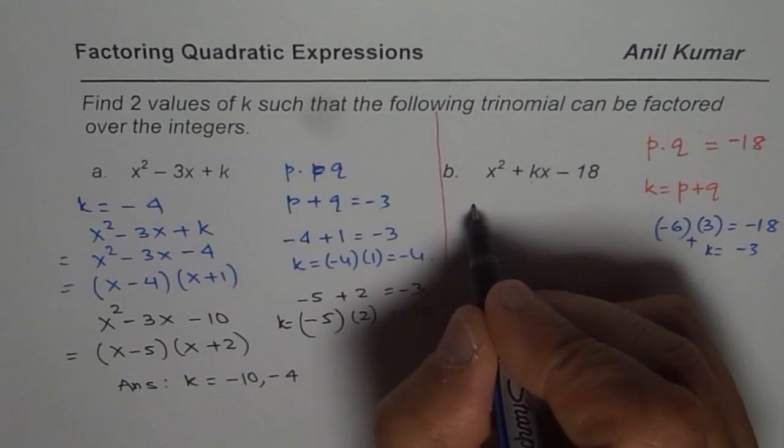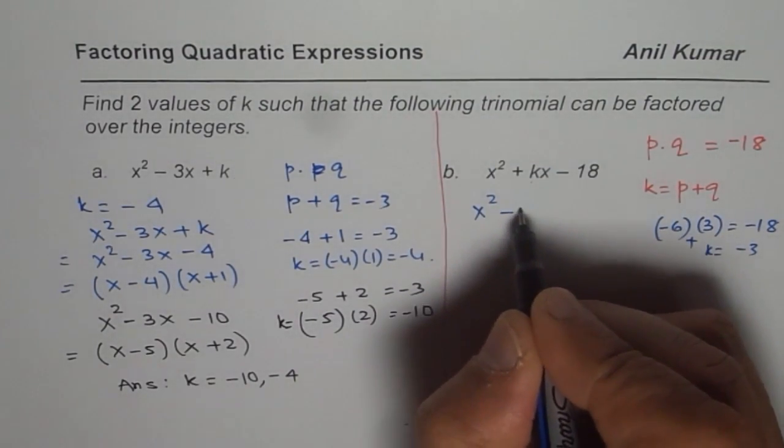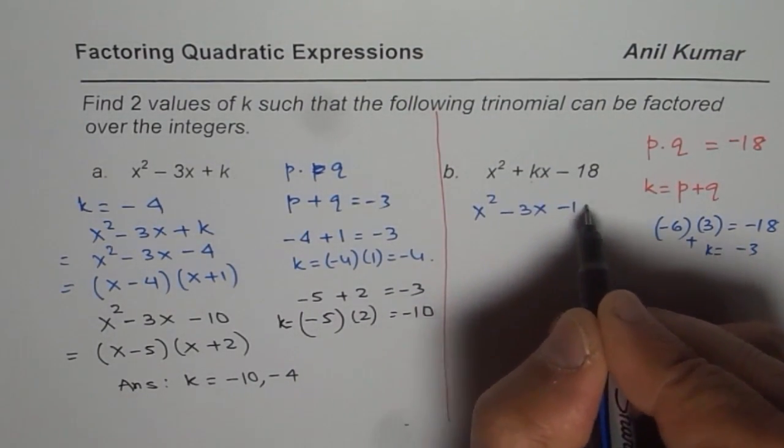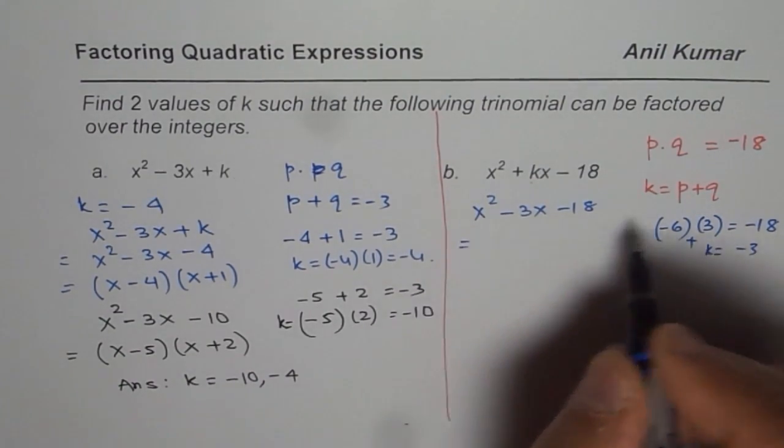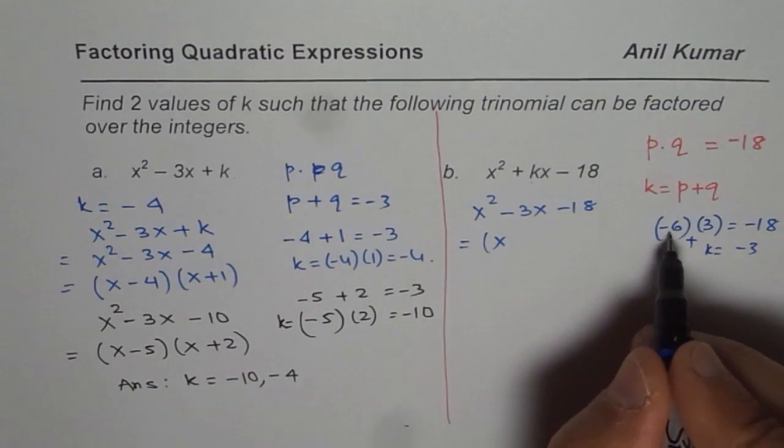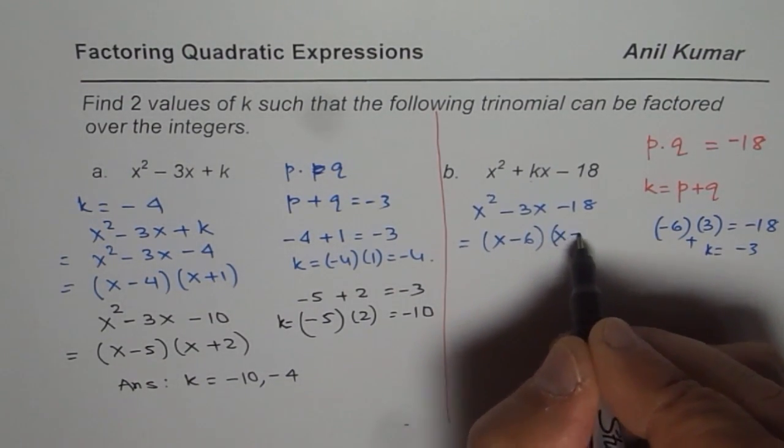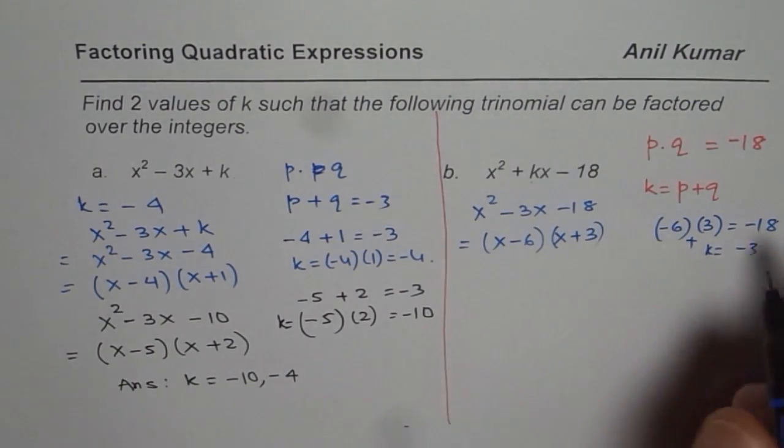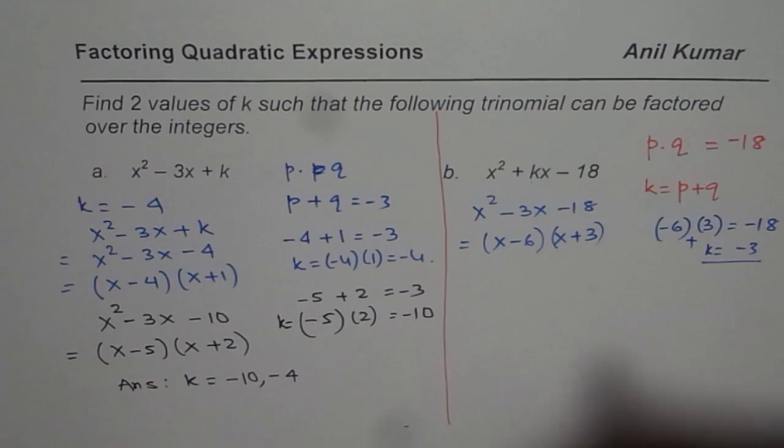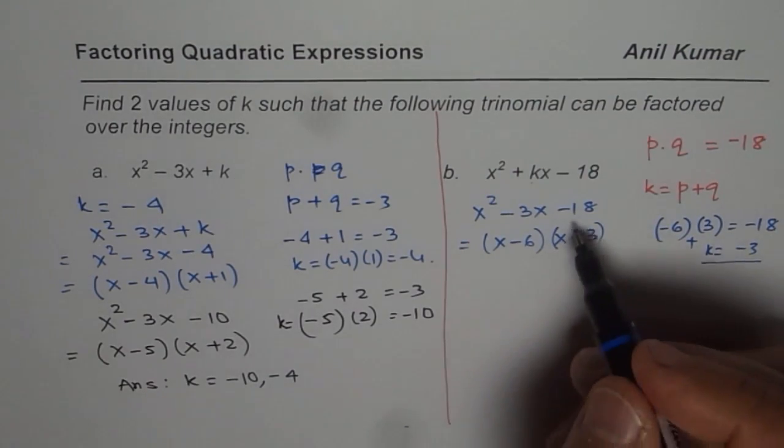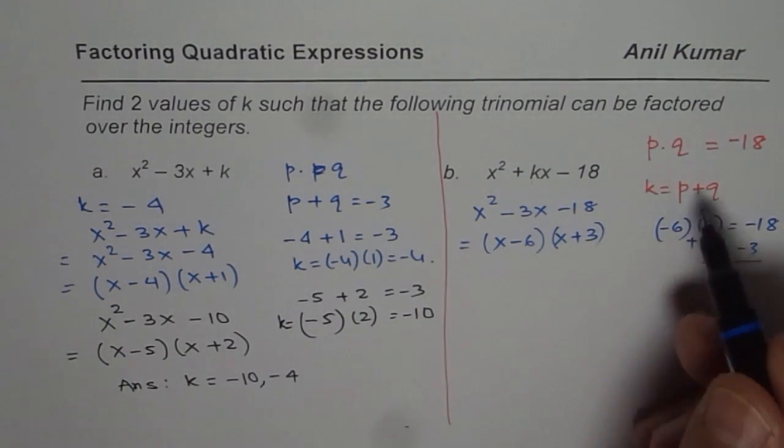I could write this as x squared minus 3x minus 18. And I could write this as x using these two numbers, minus 6 times x plus 3. You get the point, right? One of my k values is minus 3. You do not have to show it, but I am just explaining you.